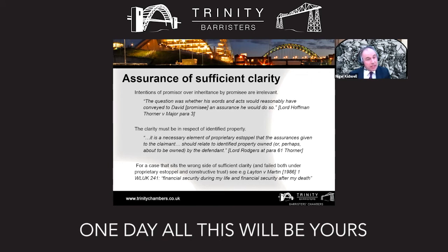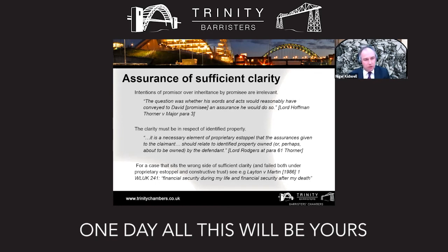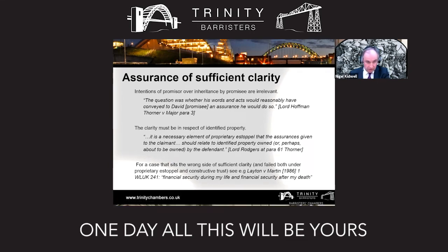In Thorner v Major, the father and farm owner were cousins — they were found to be very taciturn men. The assurances Mr Thorner received were pretty minimal. About fifteen to twenty years before Mr Thorner Senior died, he handed a bonus from an insurance policy to him and said, 'that's for my death duties.' There was a will in which Mr Thorner Junior was the substantial beneficiary, but it was destroyed — not because of any falling out, but because of a dispute with another legatee — and the will was never redone.